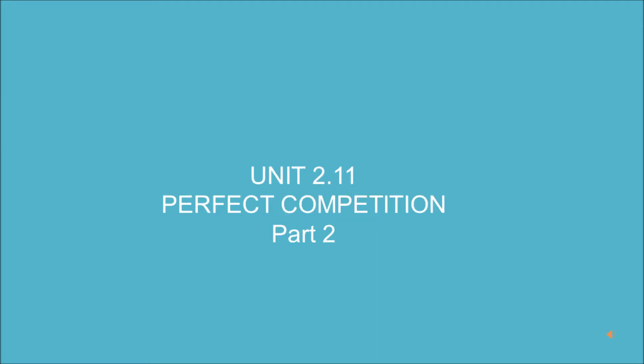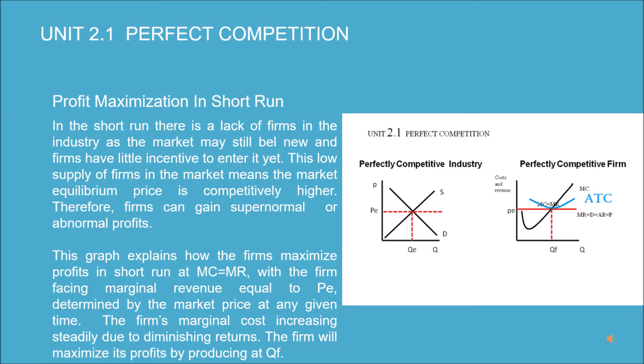Unit 2.11, Perfect Competition Part 2: Profit Maximization in the Short Run. In the short run, there is a lack of firms in the industry as the market may still be new and firms have little incentive to enter it yet. This low supply of firms in the market means the market equilibrium price is competitively higher. This graph explains how firms maximize profits in the short run at MC equals MR, with the firm facing marginal revenue equal to P_e, determined by the market price at any given time.